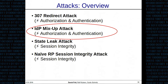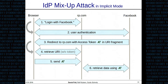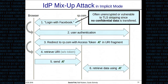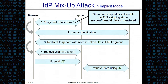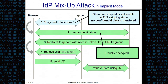Now let's look at the more complex IDP mixup attack. Here again is our implicit flow. Let's consider which requests are encrypted using HTTPS. The first request is usually not encrypted because relying parties don't see the need — there's no confidential data, it's just the user's choice to sign in using Facebook. The other requests are usually encrypted because they contain confidential data like usernames, passwords, and tokens. In this variant of the attack, we assume the first request is not encrypted, though there's also a variant that works even if it is.